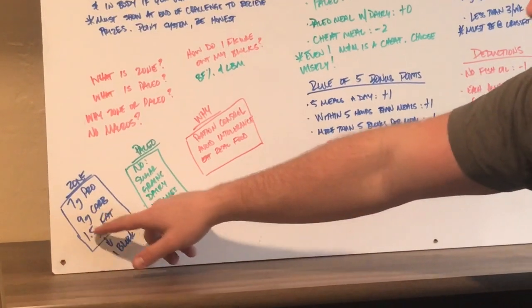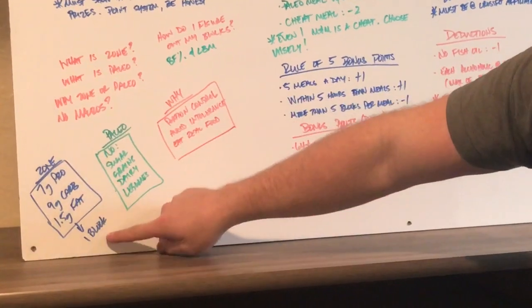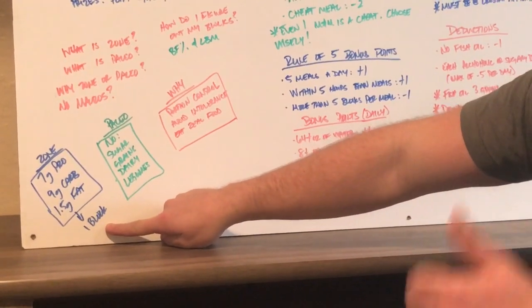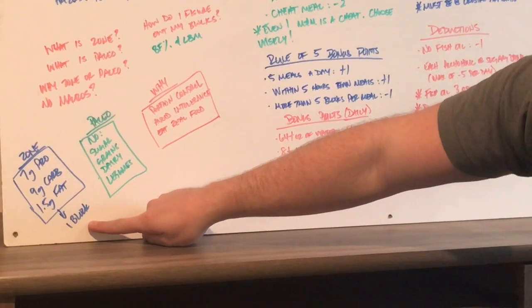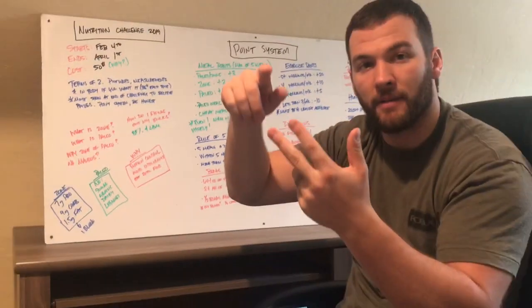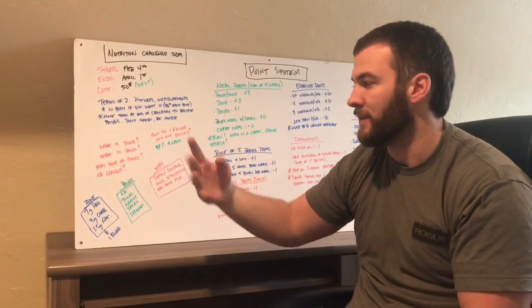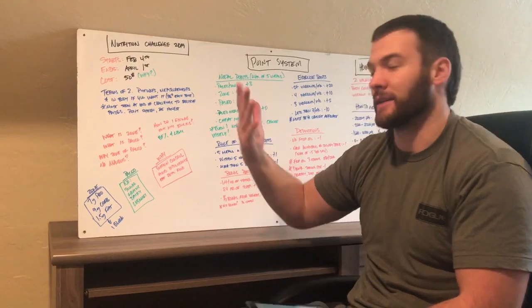And what the zone is, the seven grams of protein, nine grams of carbs, and 1.5 grams of fat, all of that would equal one block. So if I wanted a one block meal, I would do like a cup of strawberries, an ounce of chicken, and like three almonds. That, those three things, my protein, my fat, my carbs, is one block. If I was having four block meals, I would times all of those by four. Pretty simple.